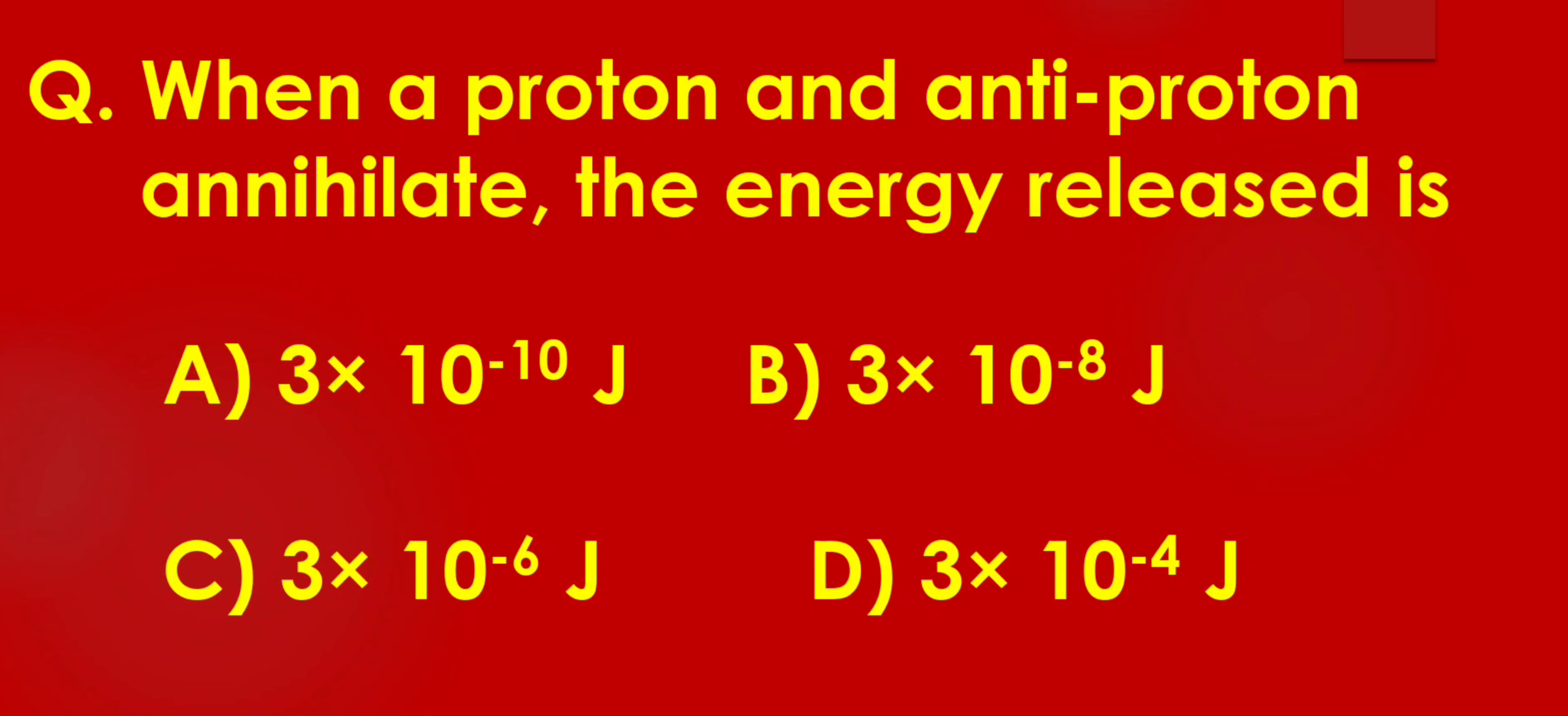So the correct option is A: 3 × 10⁻¹⁰ J. When a proton and anti-proton annihilate, the energy released is 3 × 10⁻¹⁰ J.